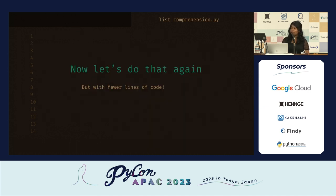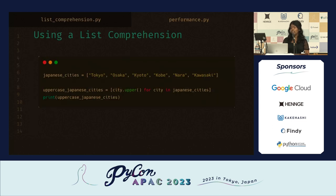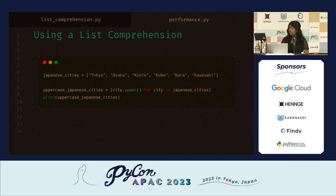We can do it again with fewer lines of code — this is where the syntactic sugar comes in with a list comprehension. We have our same Japanese cities list, but this time we use a list comprehension to set up the new uppercase list. We can initialize and iterate all in the same line. The brackets tell us this will be a new list, city.upper() modifies the elements, and then we do the iteration by going through all cities in japanese_cities. If we print this out, we get the exact same result.